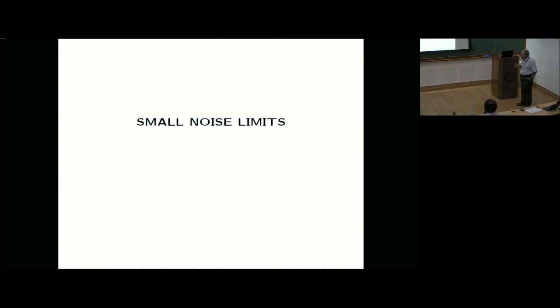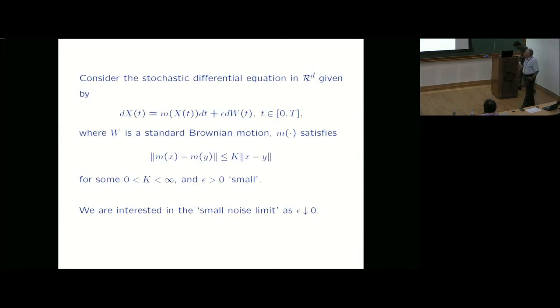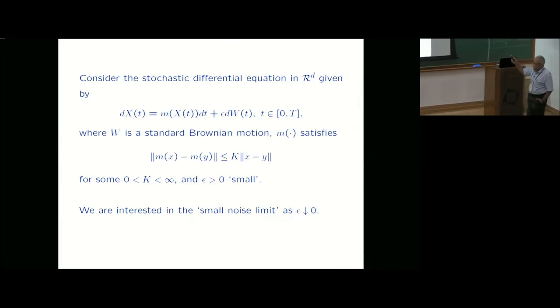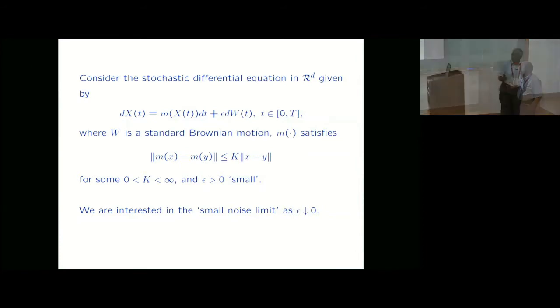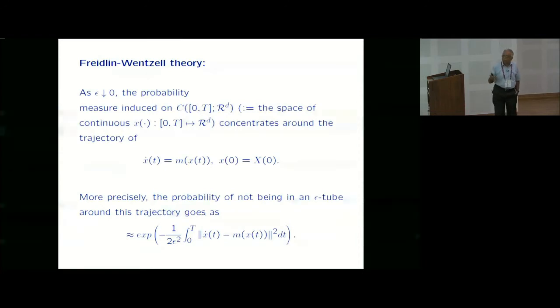Let me start with the small noise limits in general, that's the Friedland-Mensel framework. You look at the stochastic differential equation driven by Brownian motions scaled by small parameter epsilon, and I'll make the standard assumption that the drift m is Lipschitz, so that it's well posed. What we want to see is what it does as epsilon goes to zero. For the timing, I'm essentially recalling what's known from Friedland-Mensel, so I'm considering it on a finite time horizon.